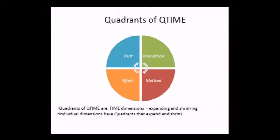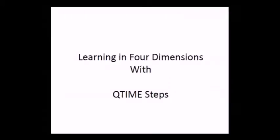We talked in the second talk about how we can learn in the trust dimension. Today we're going to discuss what we learn in the innovation dimension, and other two talks will cover the method and effort dimensions. These dimensions themselves expand and shrink as knowledge is accumulated and unlearned over time. So we have the concept of learning in four dimensions.